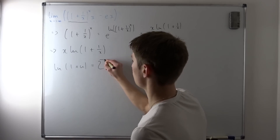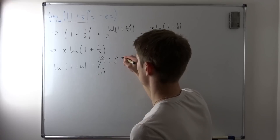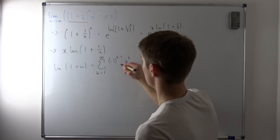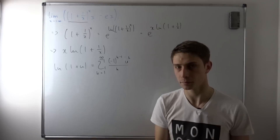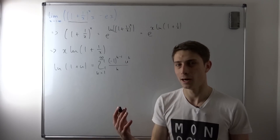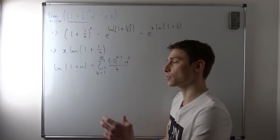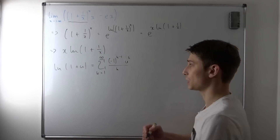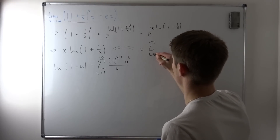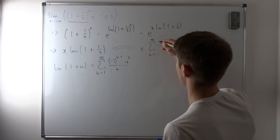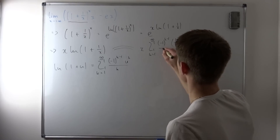We can write this as follows: the sum from k equals 1 to infinity of (−1)^(k−1) times u^k over k. That's an alternating series right here. We can plug in u equals 1 over x and see where we get. So this becomes x times the sum from k equals 1 to infinity of (−1)^(k−1) times (1/x)^k over k.